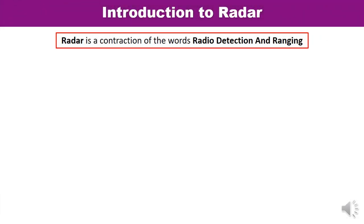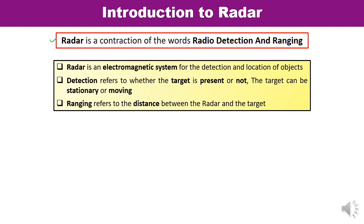Radar is a short form of Radio Detection And Ranging. The function of radar lies within this term — radio detection and ranging. Radar is extensively used for gathering various information about different types of objects. This is done by transmitting electromagnetic signals towards the object and analyzing the received echo. Radar is an electromagnetic system used for the detection and location of objects, and the nature of the object can also be determined.